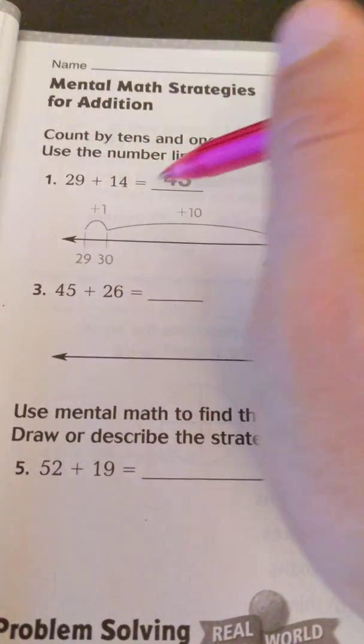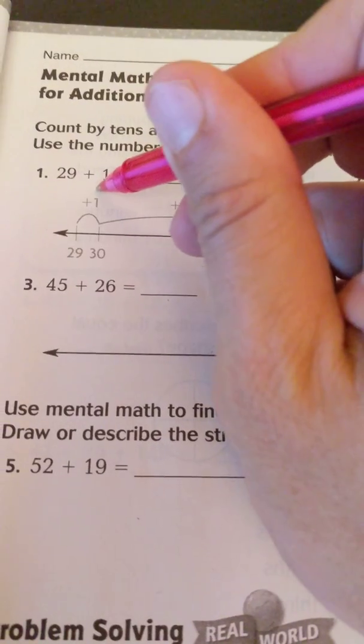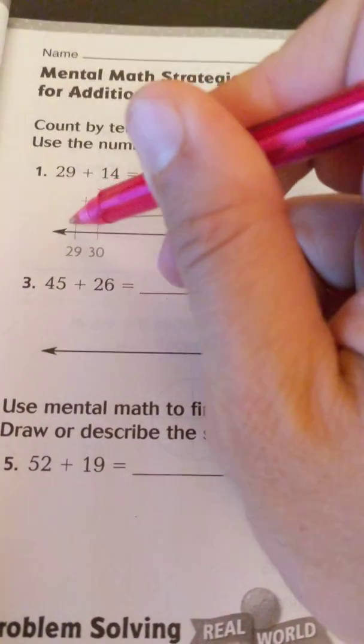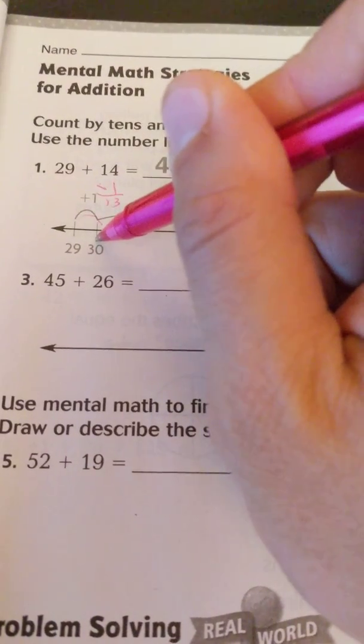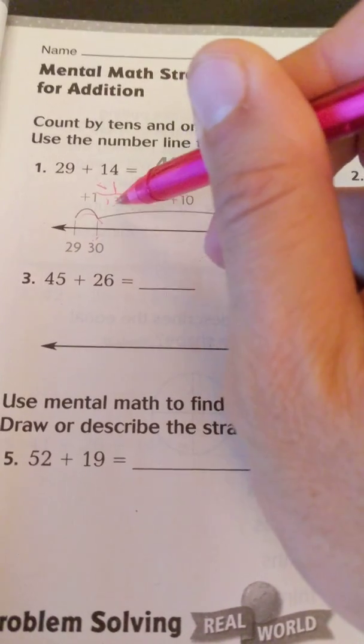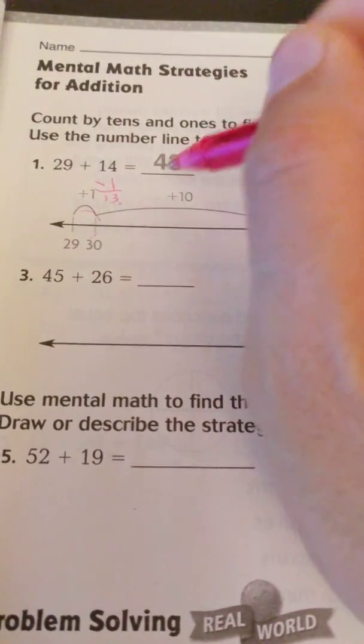And what they actually did was they took away 1 from 14, so now they have 13 left, and added it here. So now they have 30. So the 14 didn't go anywhere, just one of the 14. So now we only have to add 13 more to get the answer.